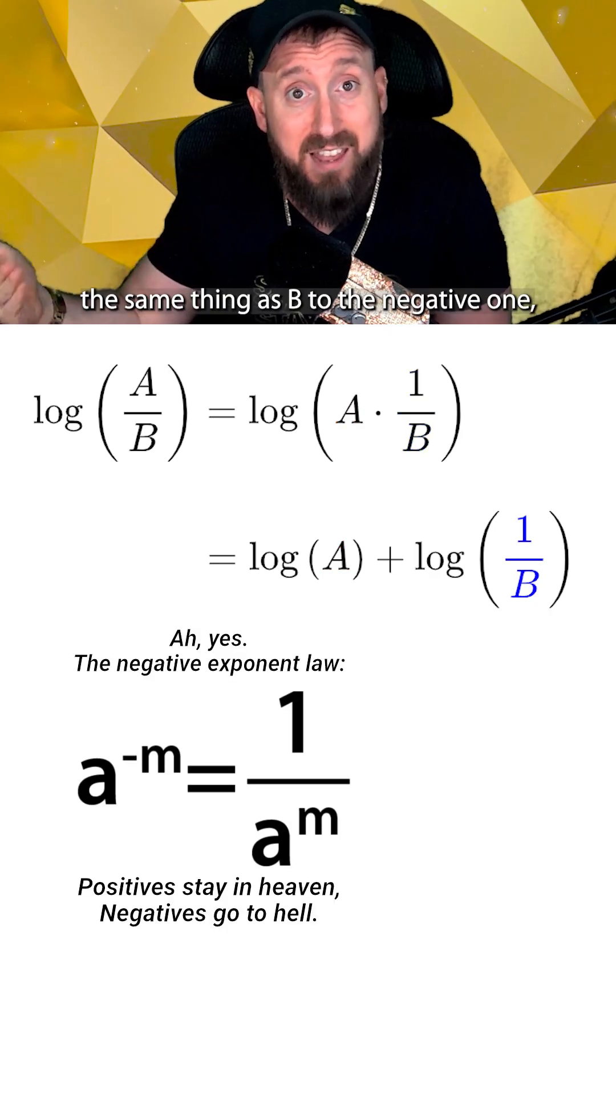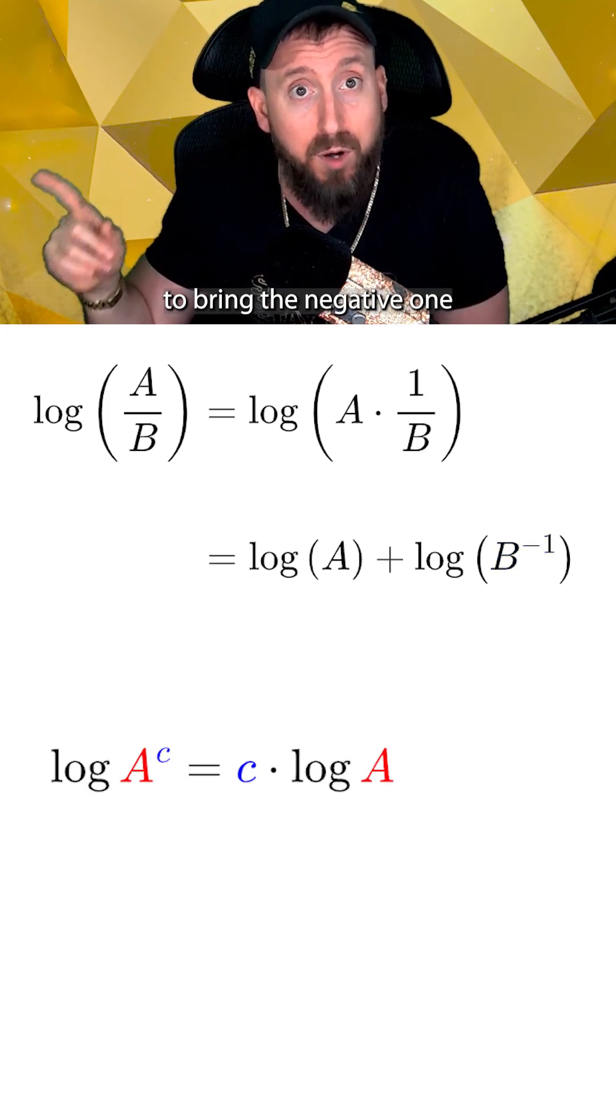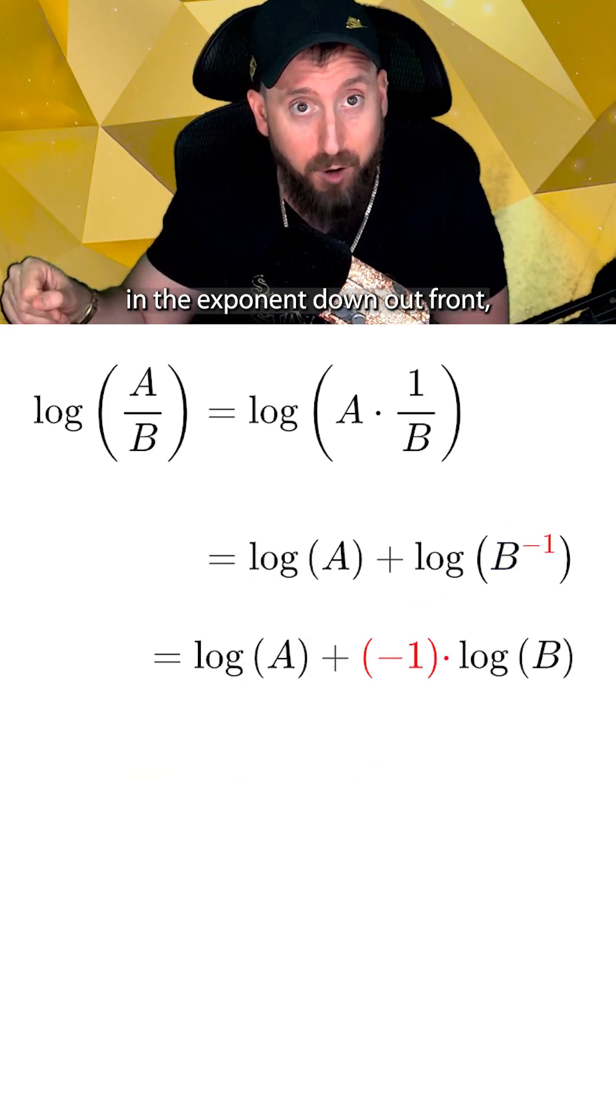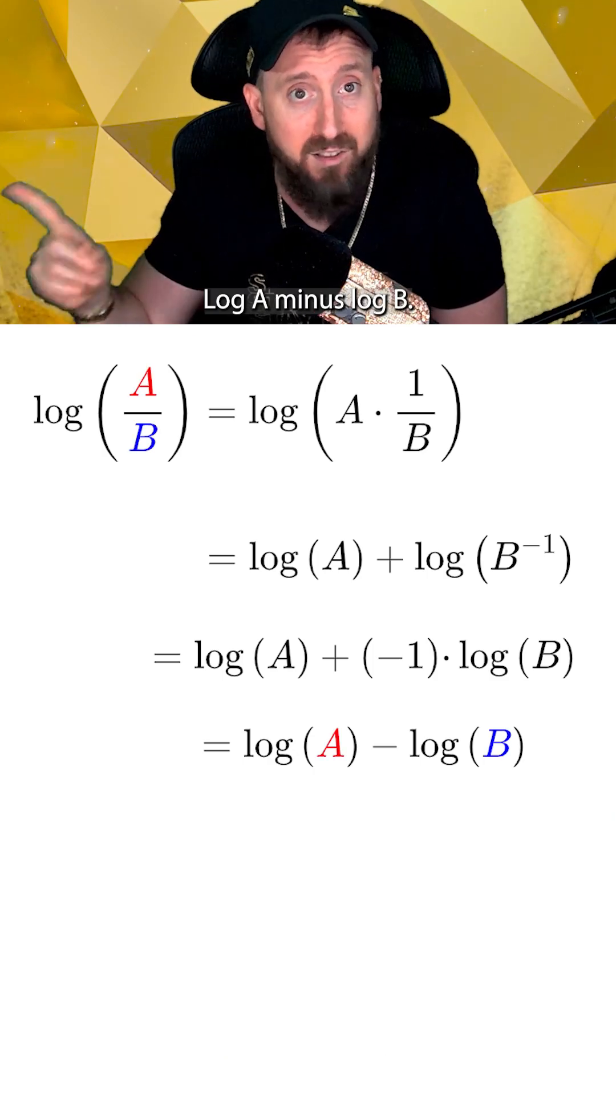And since one over b is the same thing as b to the negative one, we can follow up with the power rule to bring the negative one in the exponent down out front, which gives us the same answer that the quotient rule did: log a minus log b.